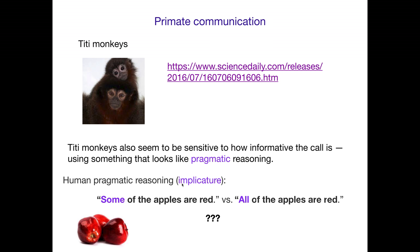Human pragmatic reasoning uses things called implicatures — they imply things because of the specific utterance you choose to say. Consider this scenario: we have three red apples. Here are two things you might choose to say. You could say, 'Some of the apples are red.' And that would technically be true, because it is true that some of the apples are red.